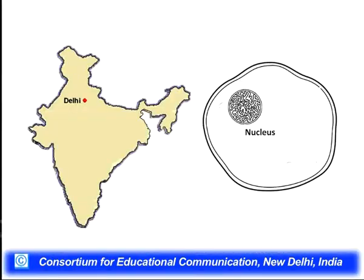As Delhi is to India, the nucleus is to a cell — it is the central headquarters controlling the entire working of the cell. Different compartments, such as mitochondria, are semi-autonomous and function somewhat independently, but the central control resides in the nucleus where the genome is located.